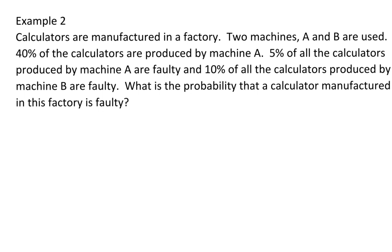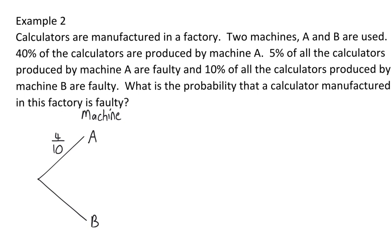With conditional outcomes, a tree diagram once again helps. Our first branch will be which machine is used. So the calculator can be produced by machine A or machine B. We are given that forty percent of the calculators are produced by machine A, so you can write it as four out of ten. A branch should always add up to a probability of one, and that is why machine B will have a probability of six out of ten, or sixty percent of the calculators.